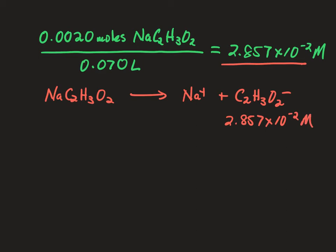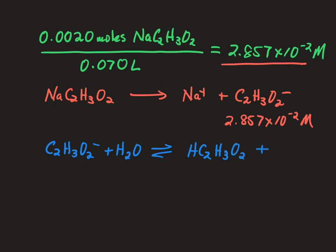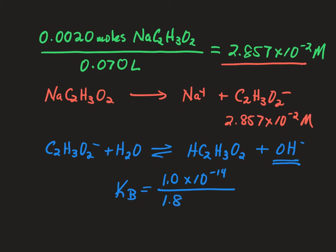With acetate ions in solution, they react with water to create acetic acid molecules plus hydroxide ions. Since the solution will be basic, we calculate the Kb for this base dissociation: Kb = Kw / Ka = (1.0 × 10⁻¹⁴) / (1.8 × 10⁻⁵) = 5.5 × 10⁻¹⁰.